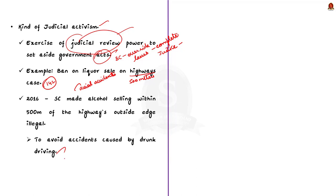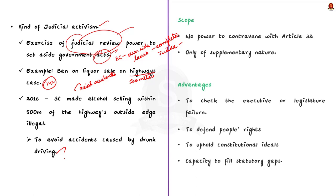Now we will see the scope of Article 142. Though Article 142's powers are broad, the Supreme Court has clarified their scope and extent over time in its various decisions. Firstly, Article 142 does not give the Supreme Court the power to contravene Article 32. Then, Article 142 is only of supplementary nature — the Supreme Court cannot substitute any substantial law or create something new which never was in existence.